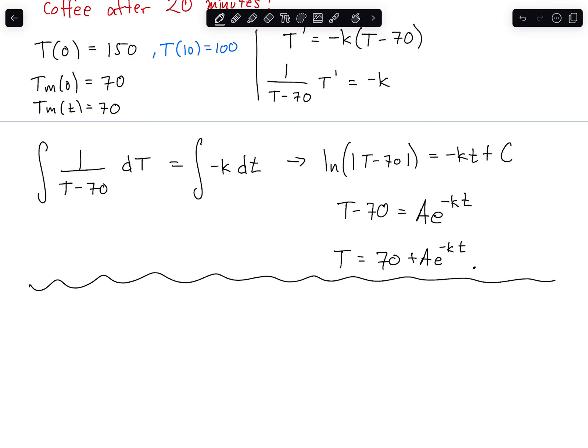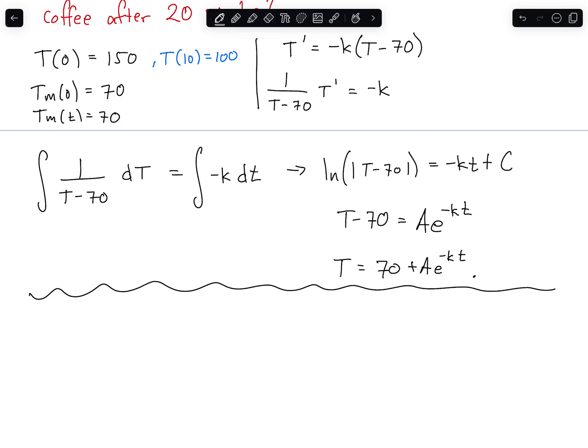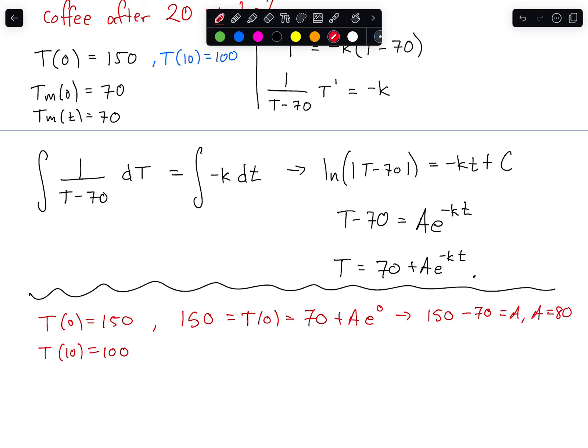So now we can use our different information we have about T, T of 0 being 150 and T of 10 being 100. We can use these two pieces of information to help us find capital A and K. So let's go look for both of those. I think we can get capital A if we use the T of 0. So let's look at T of 0, which is 150 would equal T of 0, which is equal to 70 plus A times e to the 0. So this tells us that 150 minus 70 equals A or A equals 80.